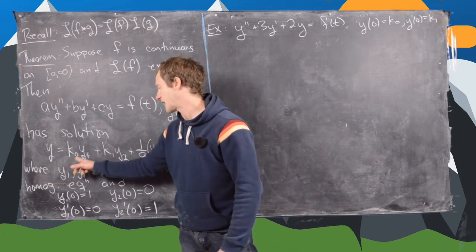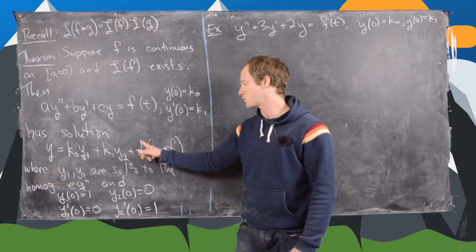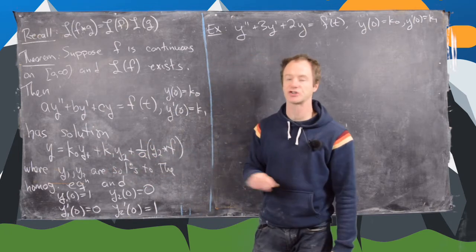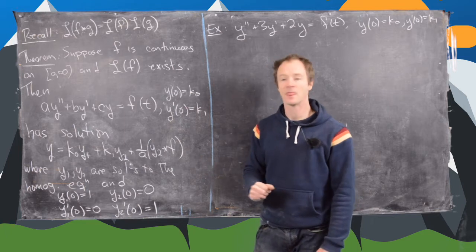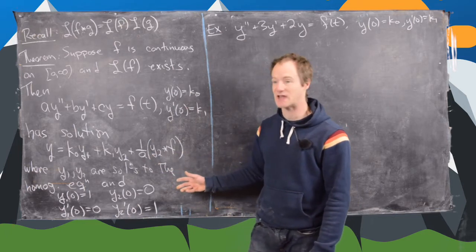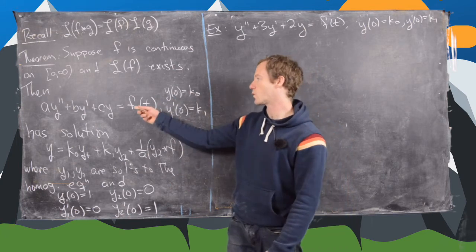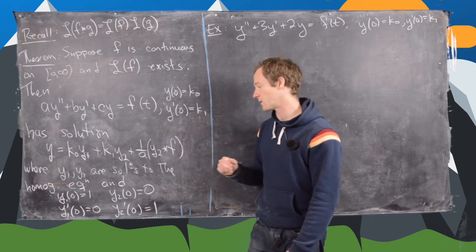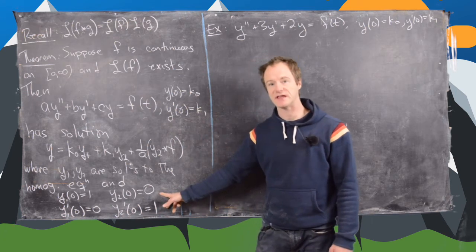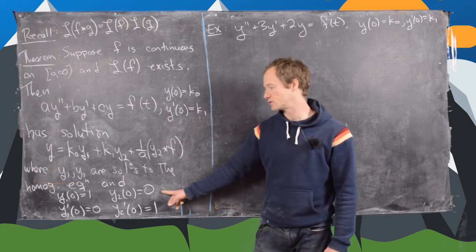So we have y equals k0 times y1 plus k1 times y2 plus 1 over a and then the convolution of y2 and f. And then also y1 and y2 are solutions that are solutions to the corresponding homogeneous differential equation, so the one where we replace f with 0, and furthermore they satisfy these initial conditions and that's really important for finding a solution in this case.